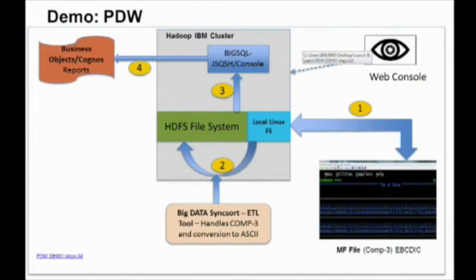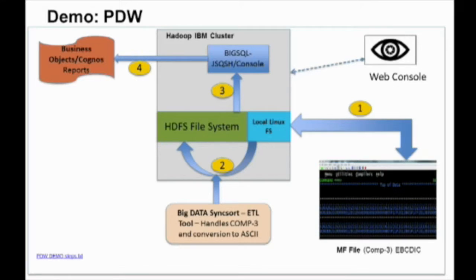We reproduced the exact same report to demonstrate the architecture. I want to quickly show you a demo — we don't have a lot of time, and within 10 minutes we can't cover all of big data, but we'll try. Hold your questions for the end. Here's a quick summary of what this demo covers. I broke the whole architecture into four steps: step one is taking the mainframe file and putting it into the Hadoop cluster. Within the IBM Hadoop cluster, you have a local Linux file system and the HDFS file system — Hadoop Distributed File System — which is the core of all Hadoop.